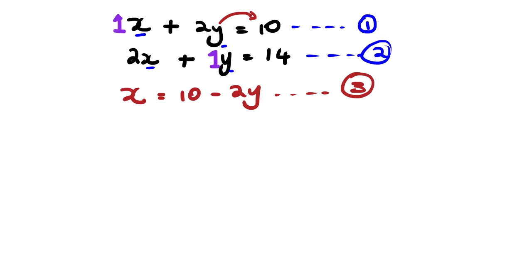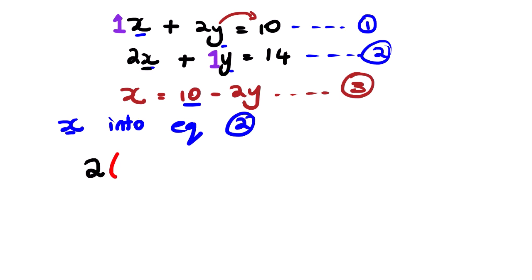We are going to substitute x into equation number two. Where we see x in equation number two, we substitute it with 10 minus 2y. Note that since we chose equation number one to generate equation number three, we cannot substitute back into equation number one — we must substitute into the equation we did not choose. So we rewrite: 2(10 minus 2y) plus y equals 14.